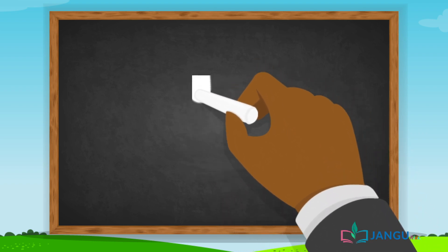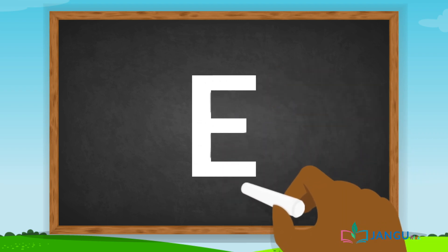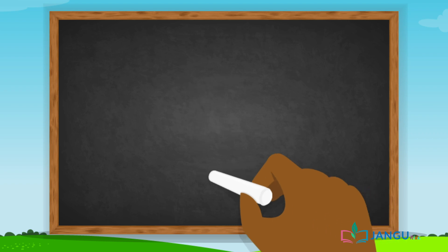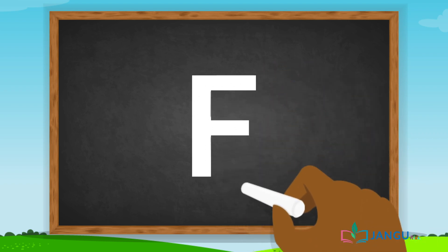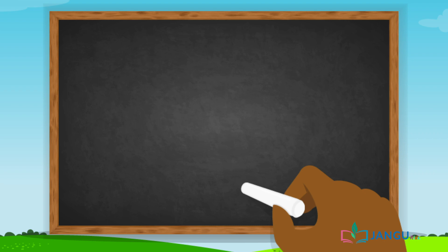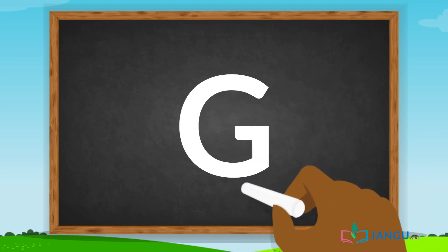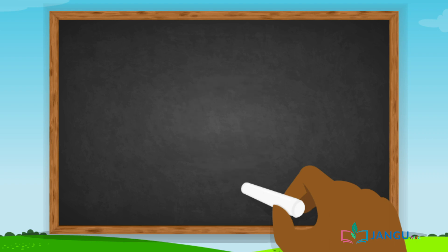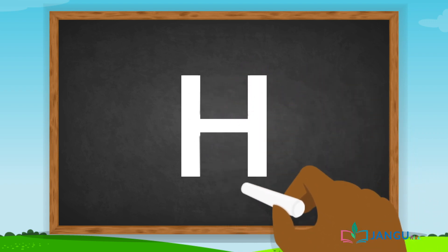E has a long straight line with three short straight lines. F has two short straight lines. G has half of a circle with a short straight line. H has two long straight lines with a short straight line in the middle.